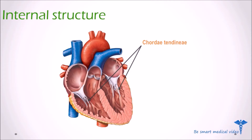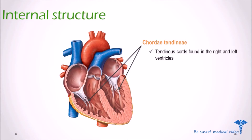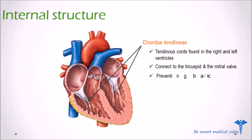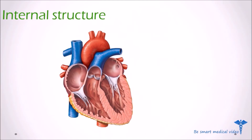First is the chordae tendineae. The chordae tendineae are tendinous cords found in the right and left ventricles of the heart that connect to the tricuspid valve and the mitral valve. The function of the chordae tendineae is preventing backflow of blood into the atria and limiting the atrioventricular valves' capacity to flap back into the corresponding atrium.